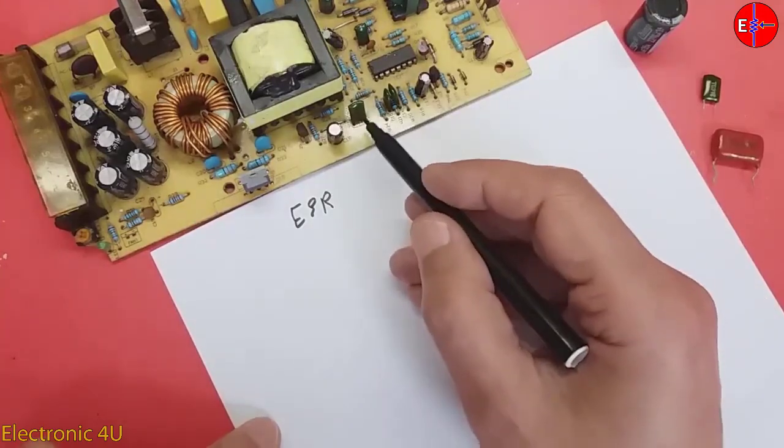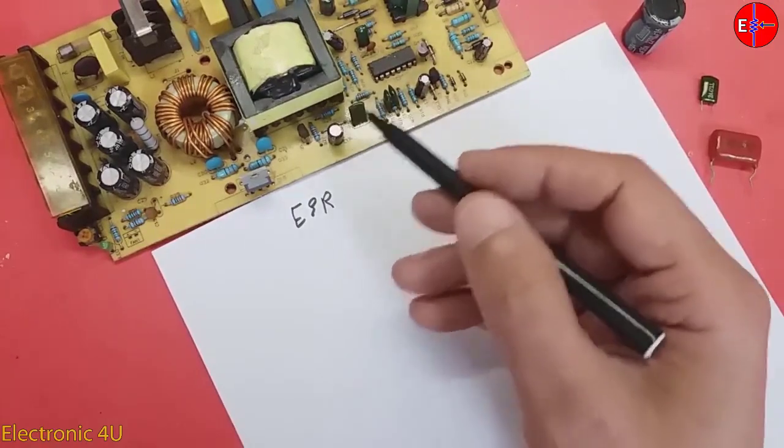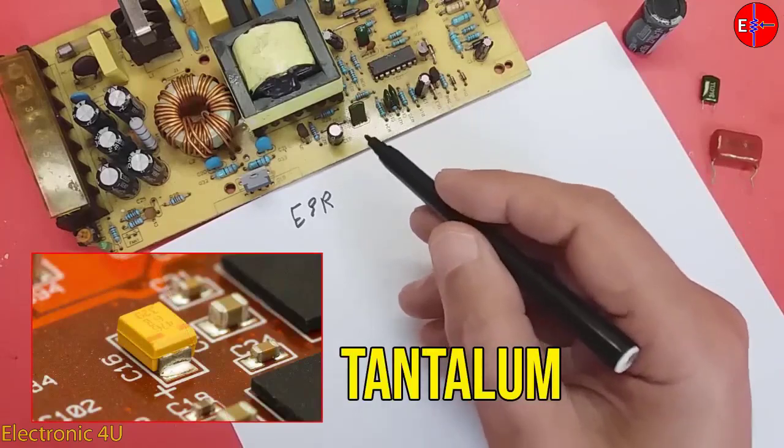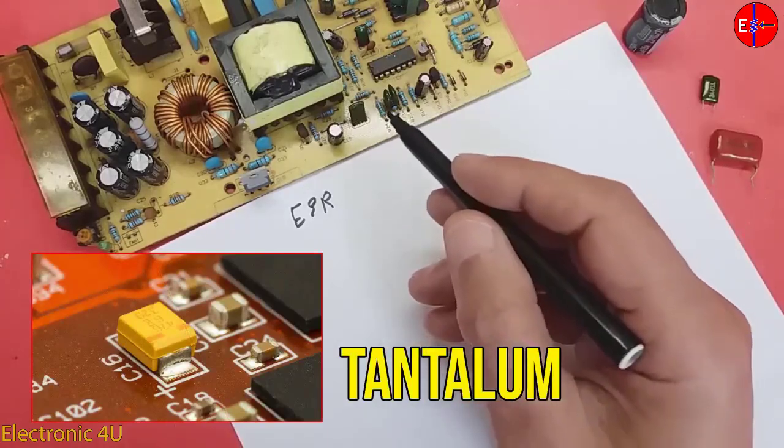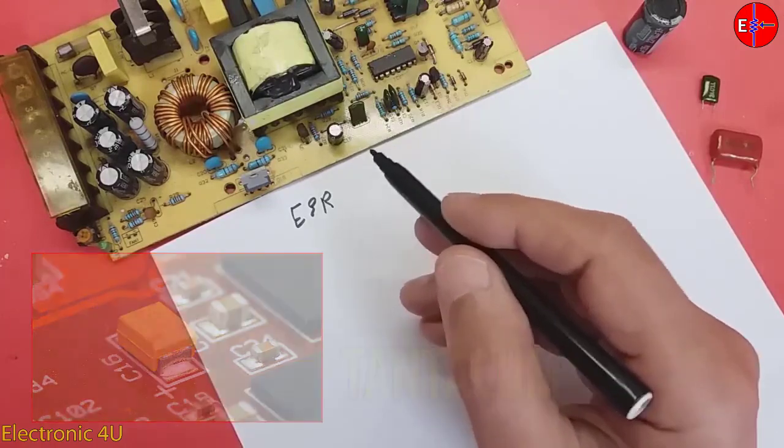Because ceramic capacitors are multi-layered, it's possible to produce noise due to voltage fluctuation. But the tantalum capacitor is not sensitive to voltage fluctuation and produces less noise. It means that it has very little noise.